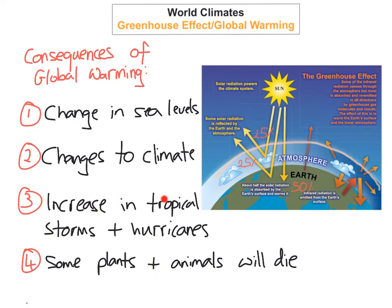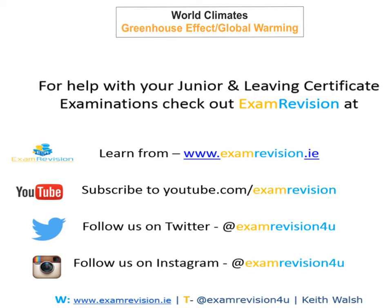So now we've looked at some of the consequences of global warming. I've explained the greenhouse effect, why it's good and also why it's bad, and how global warming is actually happening. That's it for today's tutorial — I hope you enjoyed it and learned a lot. Please leave me some feedback, ask any questions in the comments below, and please subscribe to the YouTube channel. Thanks guys.